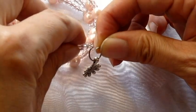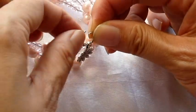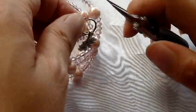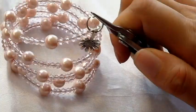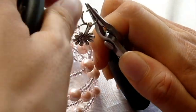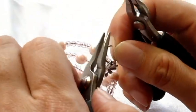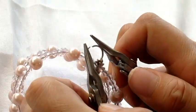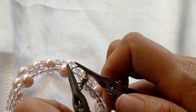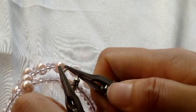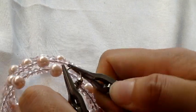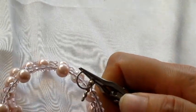Insert the jump ring into the loop of the bracelet, and now with the help of two pliers again, close it by moving them to the center.